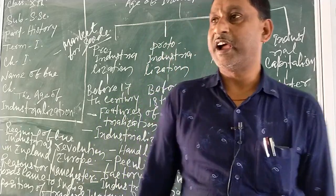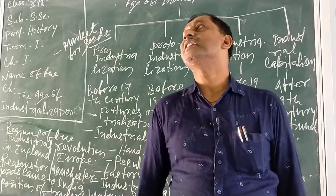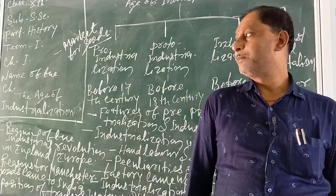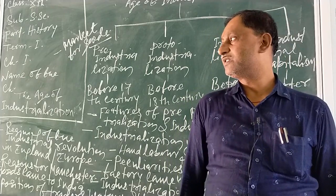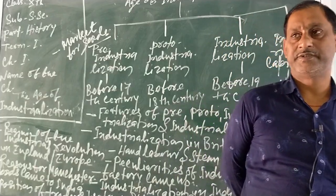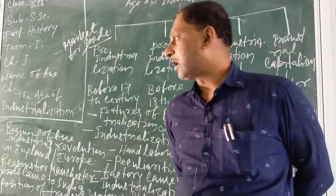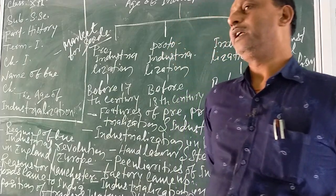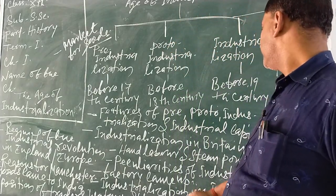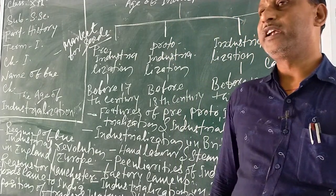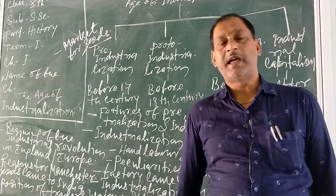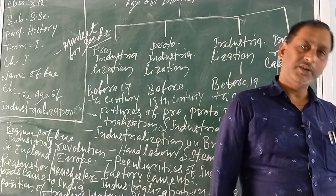Some features of proto-industrialization include intricate design and domestic exchange due to the simple machine-based system of production and management. The third period of industrialization took place during the 18th and 19th centuries in England as well as Europe.